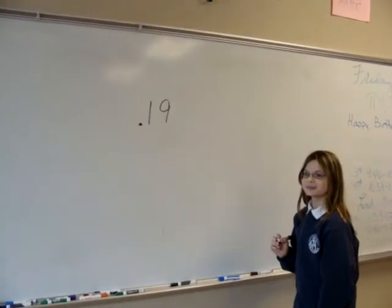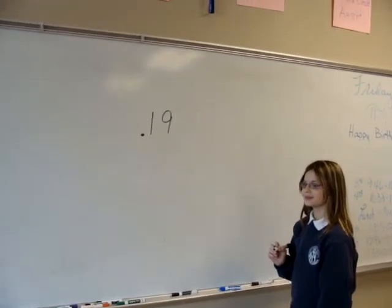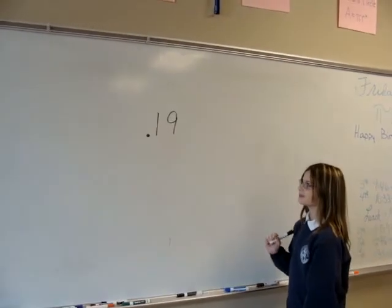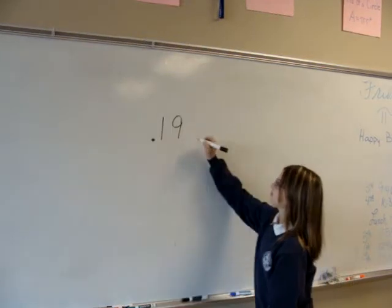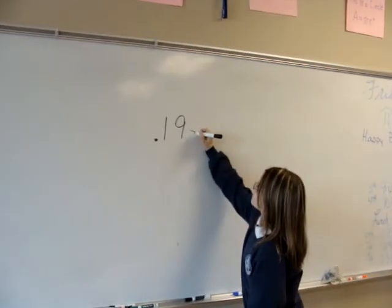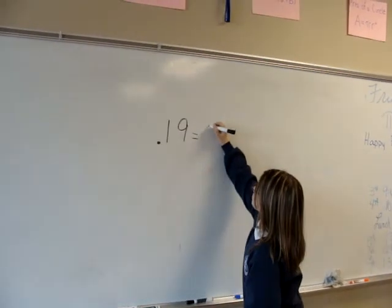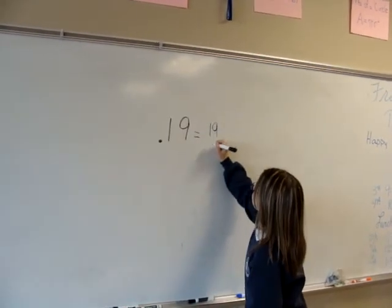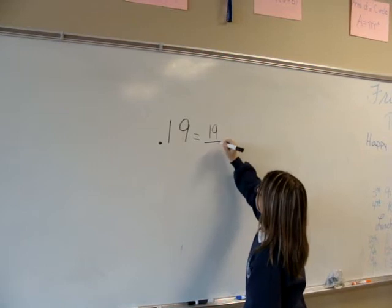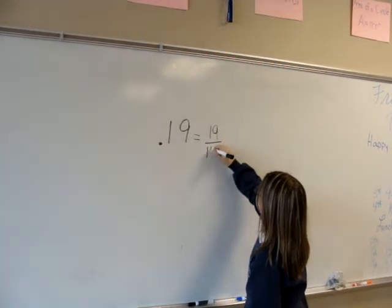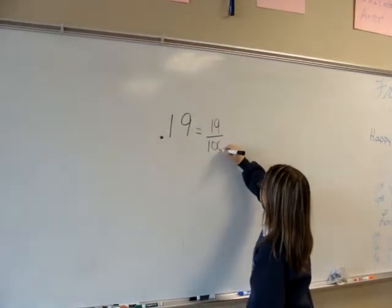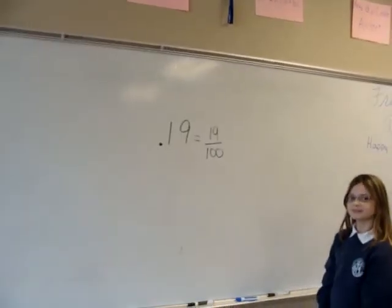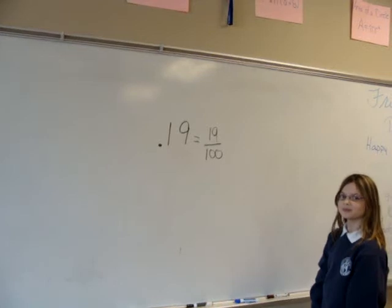Today we're going to be changing a decimal into a percent. To do this, we're going to take the portion after the decimal and make it into our numerator. Our denominator is going to be 100 because there are two places after the decimal: the 10th place and the 100th place.